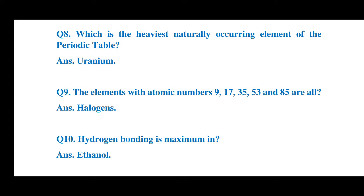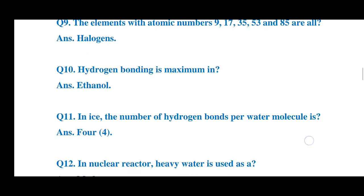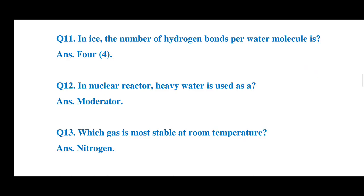Question 10: Where is hydrogen bonding maximum? The answer is ethanol. Question 11: In ice, the number of hydrogen bonds per water molecule is? The answer is 4.